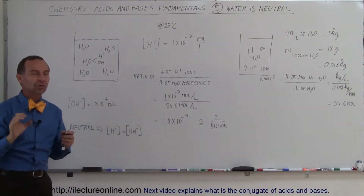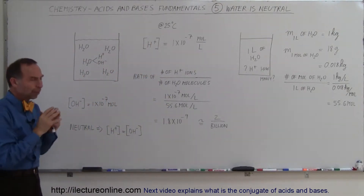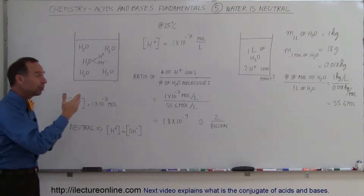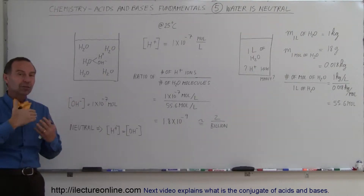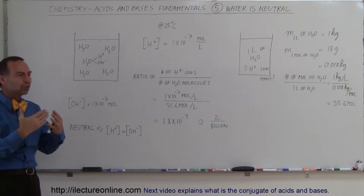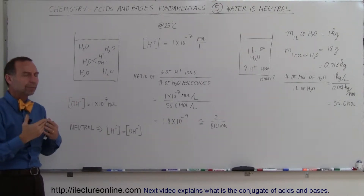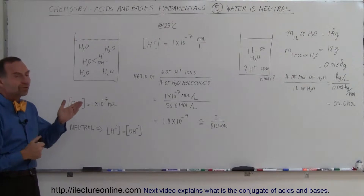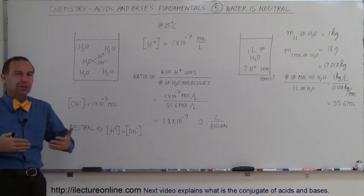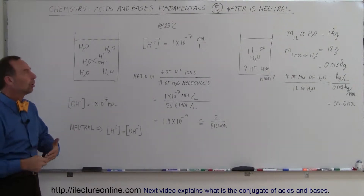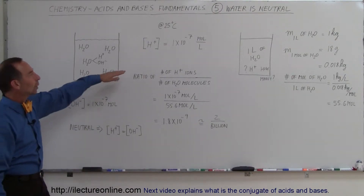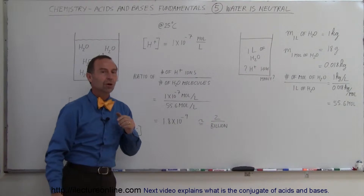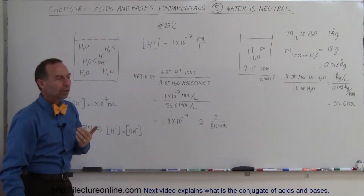This is very important and not always pointed out: the number will be different at different temperatures. At higher temperatures the dissociation will be higher. So at 25 degrees centigrade, which is typically room temperature, the number is 1×10⁻⁷ moles per liter.